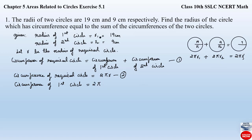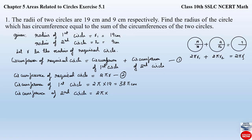The circumference of the first circle is 2π × 19, which equals 38π centimeters — let this be equation 3. Similarly, the circumference of the second circle is 2π × 9, which equals 18π centimeters — let this be equation 4.